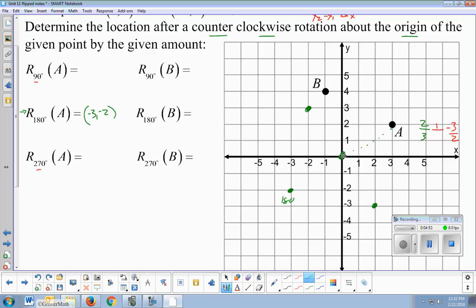So instead of up 2, we're over 2. Instead of over 3, we're up and down 3. And since we're going counterclockwise, this would be our 90 degree rotation. We already mentioned 180, and then this would be where the 270 lands. So 90 degrees for A would be the point negative 2, 3. And 180 we already did. 270 would be 2, negative 3.